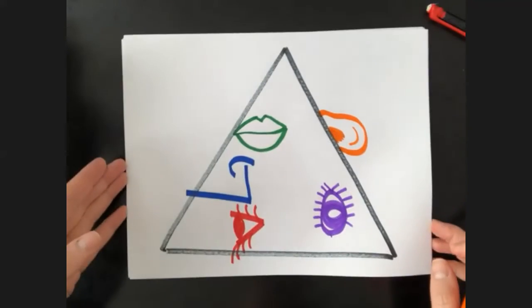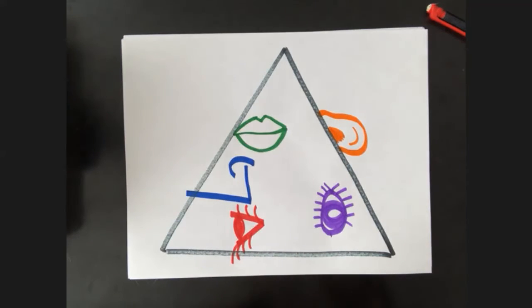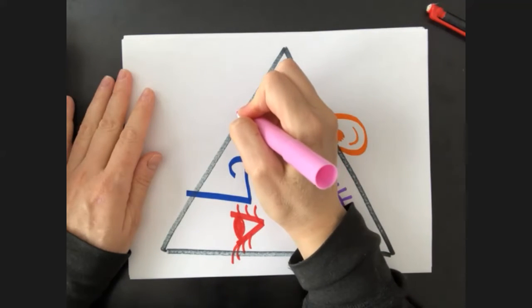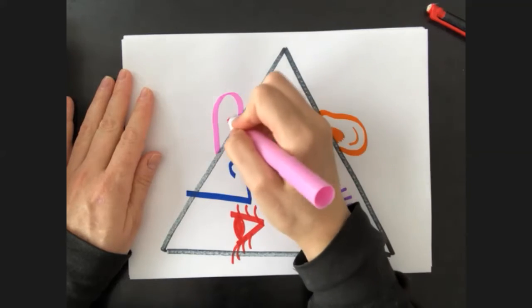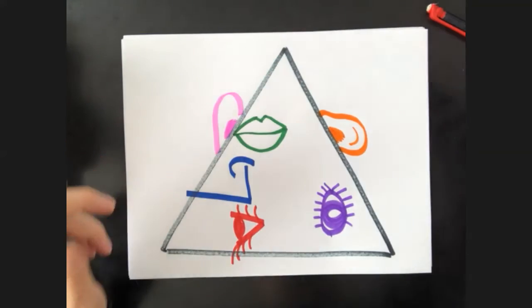Now once again, you're going to turn your paper. It's getting kind of silly. If you don't have more colors, that's fine. I'm just, like I said, showing you different colors. So I'm going to do my other ear over here. Oh dear, this is a weird face.